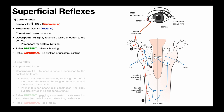So in this reflex loop, the sensory component is the trigeminal nerve, cranial nerve 5. The motor component is the facial nerve, cranial nerve 7. But before we get into the actual testing procedure and the interpretation of results, let's talk about the reflex loop itself.